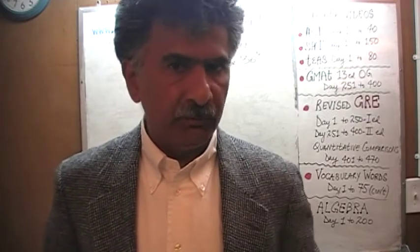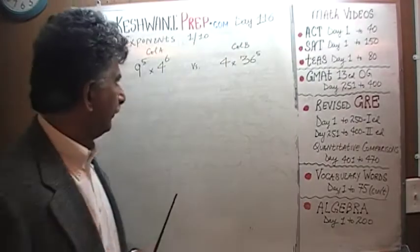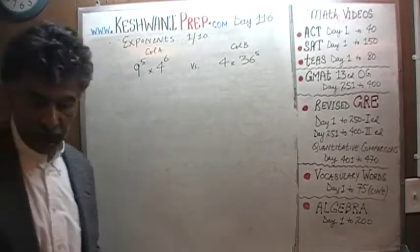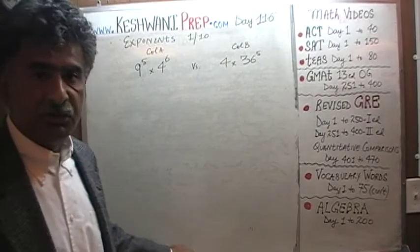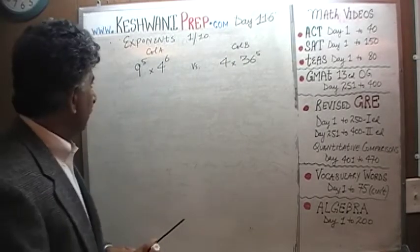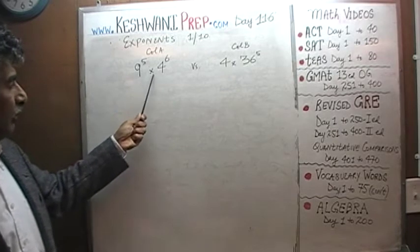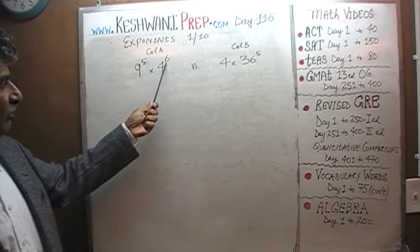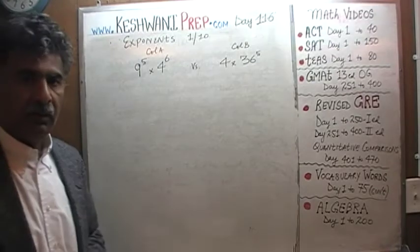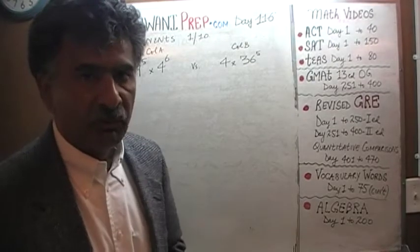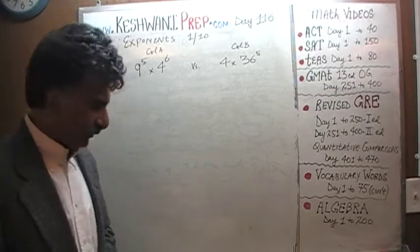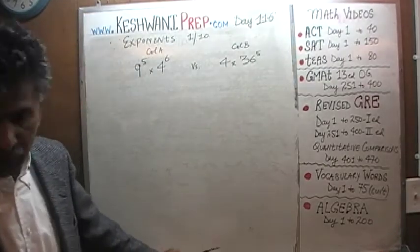The very first problem is already on the blackboard. Let's take a look at it. We are given two quantities in the two columns, column A and column B. And our job is to figure out which column is bigger or if they happen to be equal. 9 raised to 5 times 4 raised to 6 versus 4 times 36 raised to 5. Why don't you pause the video, solve the problem yourself and then compare your work against the work that we will do together. Pause the video and do it yourself.